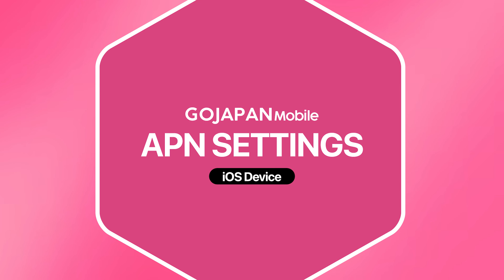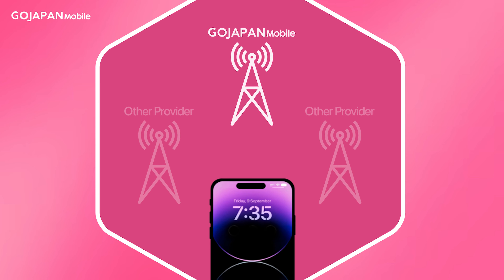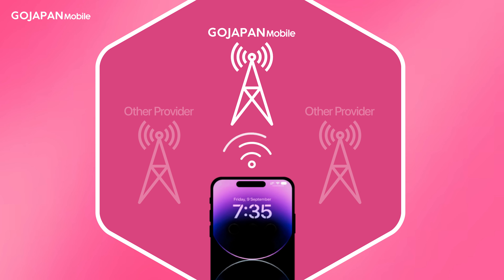Thank you for purchasing GoJapan's mobile service. Access Point Name or APN is a setting that acts as the bridge between your GoJapan cellular network and the public internet.